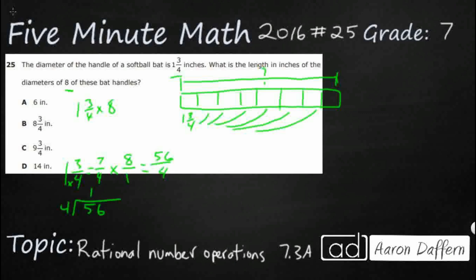4 goes into 5 one time. That's going to be nice and easy. And then it's going to be 4 goes into 16 four times. So that's going to be 14, no remainder. So it looks like our answer is D.